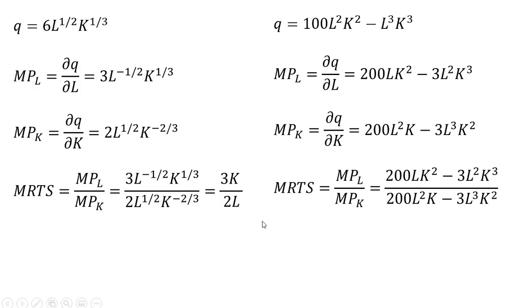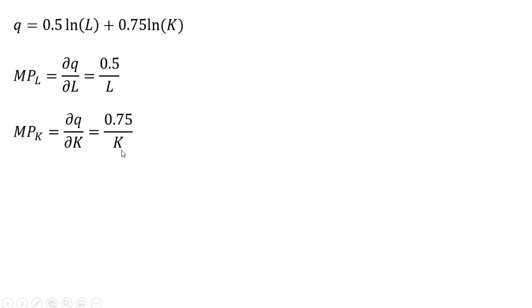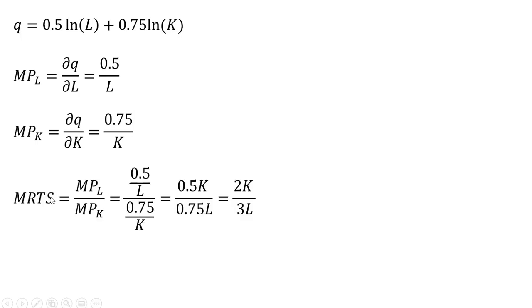In our final example, we have the production function — the firm's output — as 0.5 times the natural log of labor plus 0.75 times the natural log of capital. For the marginal product of labor, the partial derivative of the natural log of L is going to be 1 over L, and since that's being multiplied by 0.5, we have 0.5 in the numerator. For the marginal product of capital, the partial derivative of the natural log of k — just bring that k down into the denominator, and that 0.75 is being multiplied throughout. Forming the ratio and simplifying, 0.5 divided by 0.75 is just 2/3, so we get 2/3 times k divided by L.